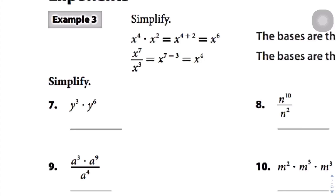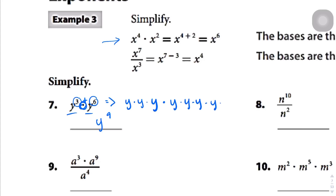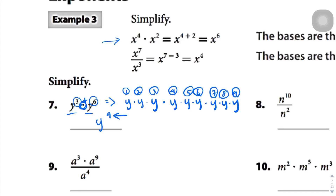Now for exponents: when we are multiplying exponents that have the same base of y, we add the exponents. So y to the power of 3 times y to the power of 6 becomes 3 plus 6, which equals y to the power of 9. To see why: y cubed expands to y times y times y, and y to the sixth is y times y times y times y times y times y. Multiplied together that gives 9 y's total — y to the power of 9. This only works because the terms are being multiplied.